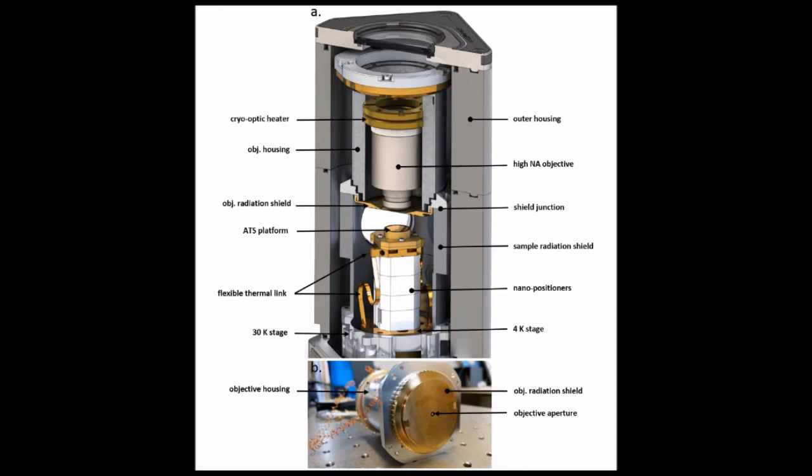The outside of the objective and housing are wrapped in a heat coil and temperature stabilized with respect to room temperature to within a few hundred nanokelvin, making it immune to temperature fluctuations in the laboratory, resulting in ultra-stable high-quality imaging from the top window.